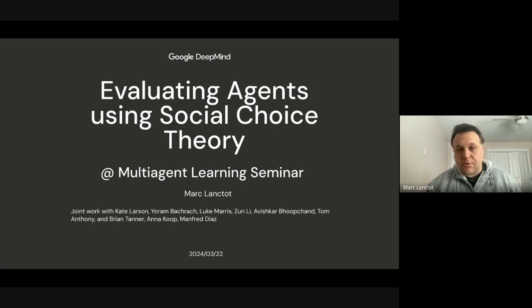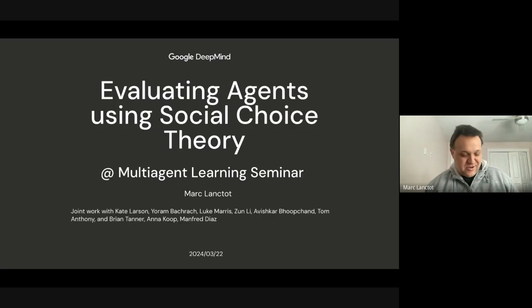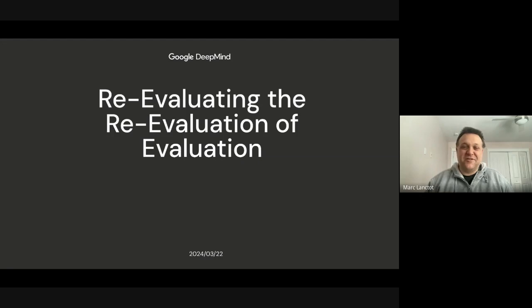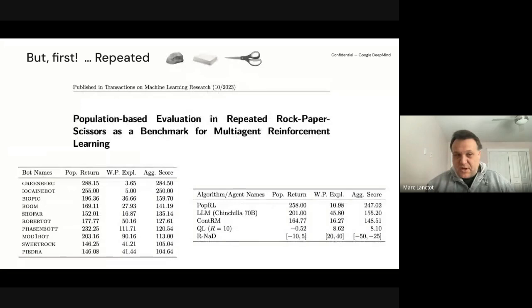I'm going to tell you about a paper called 'Evaluating Agents Using Social Choice Theory.' It's kind of neat because we had a number of candidate names for this. We could have called it 'Re-evaluating the Re-evaluation of Evaluation,' or '200 Plus Years of Social Choice Theory Is All You Need.' But we went with the rather boring title: 'Evaluating Agents Using Social Choice Theory.'